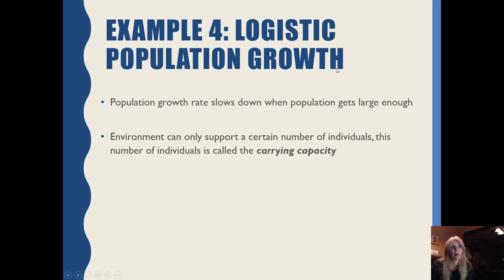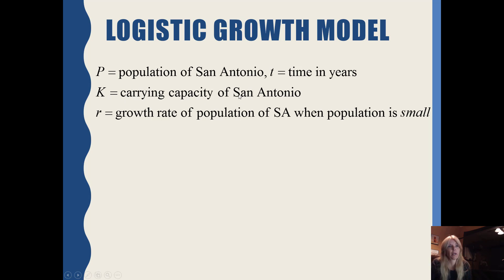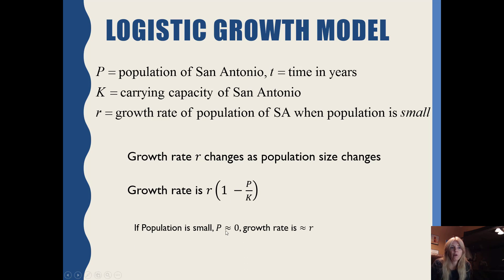The logistic population growth model uses K for carrying capacity and R for the growth rate of the population when the population is small at the start. The growth rate changes as the population size changes. If you have a very small population at the very beginning, your growth rate is just essentially the rate times one, since the correction term goes to zero — so you just have the actual rate.